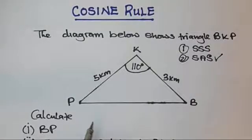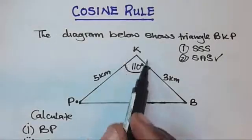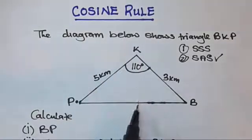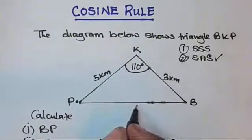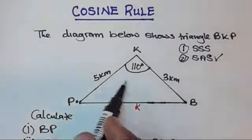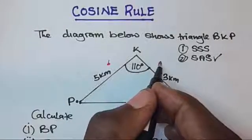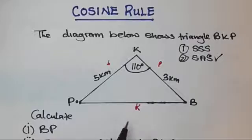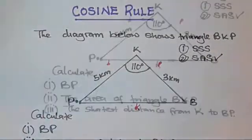When dealing with the cosine rule, you can see that the given angle is opposite to the side they are asking us to find. We are going to label the angle opposite BP as capital K, the corresponding side as small k, and the other vertices as capital B and capital P with sides small b and small p respectively. So what they are asking us to find is k — this distance here.